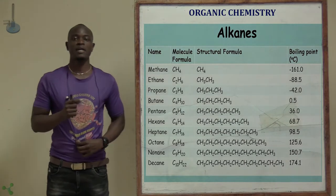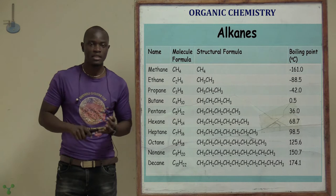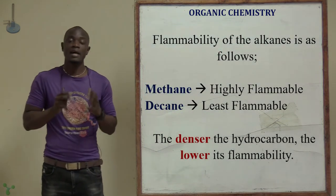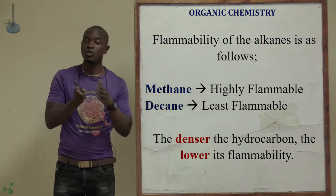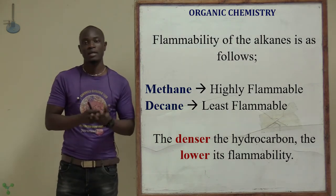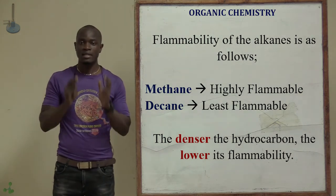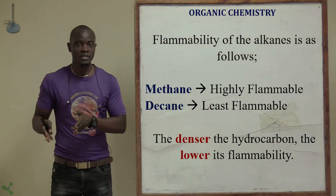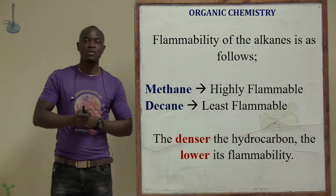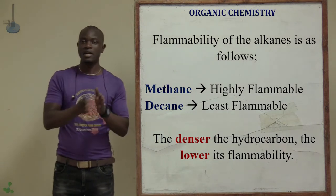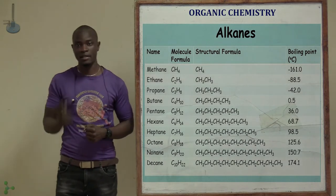This explains why the members lower in the hydrocarbon family — methane, ethane, propane, and butane — are highly flammable. As the number of carbon atoms increases, the viscosity increases, the color increases, and the boiling point increases, while the flammability decreases.